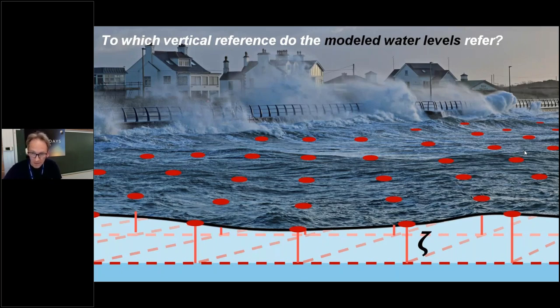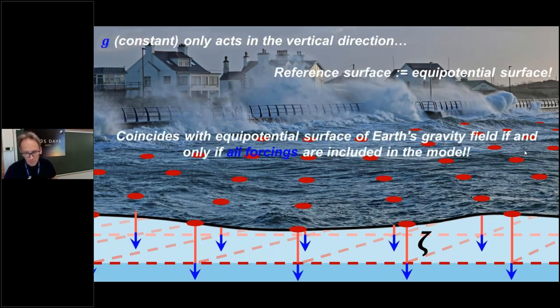We would like to exploit the hydrodynamic models developed by Deltares for doing the correction of the dynamic topography, which I indicated here with SEDA. The basic question that we have is: to which vertical reference do the model water levels refer to? The model equations just say that the gravity acceleration, which is assumed to be constant, only acts in the vertical direction, which means that the reference surface is an equipotential surface.